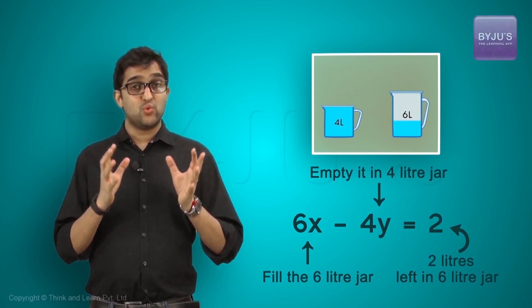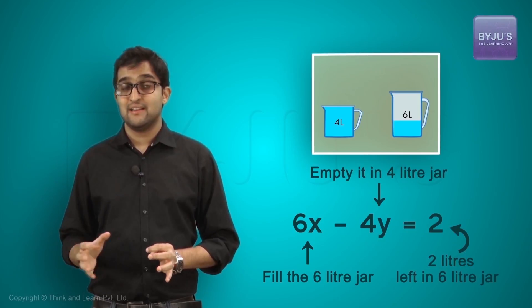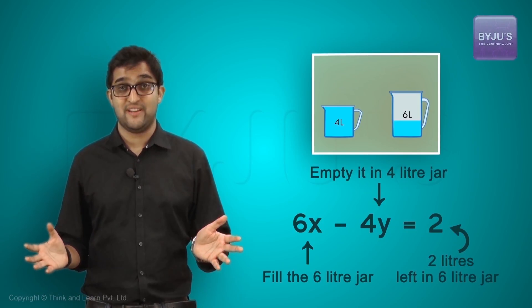Thus, we are able to measure 2 liters using just a 6 liters and a 4 liters jar, taking into account all the constraints which are given to you in the question.